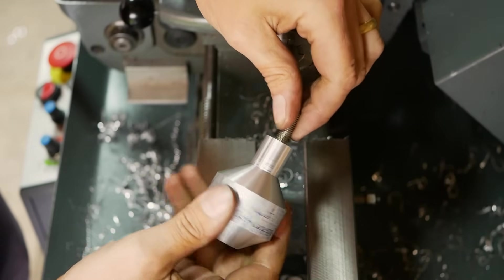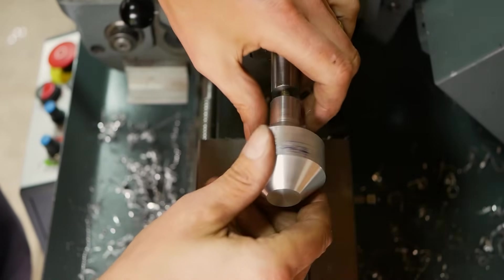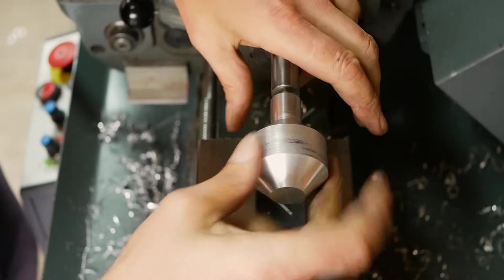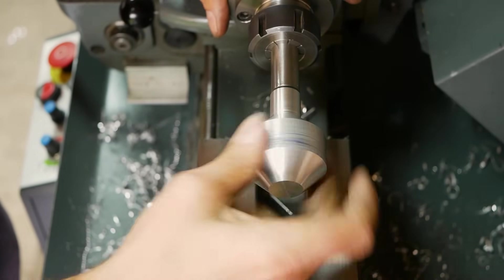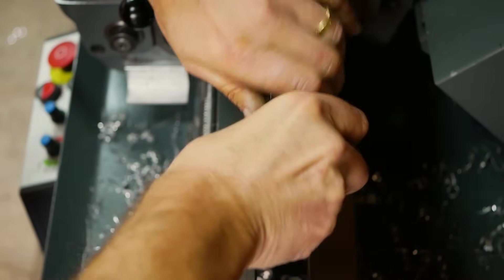Alistair screws the roughed sphere onto the arbor. By machining the sphere in situ, the resulting geometry is accurately concentric. The sphere can now be transferred between machines, and providing accurate collets are used, a high degree of accuracy can be maintained.